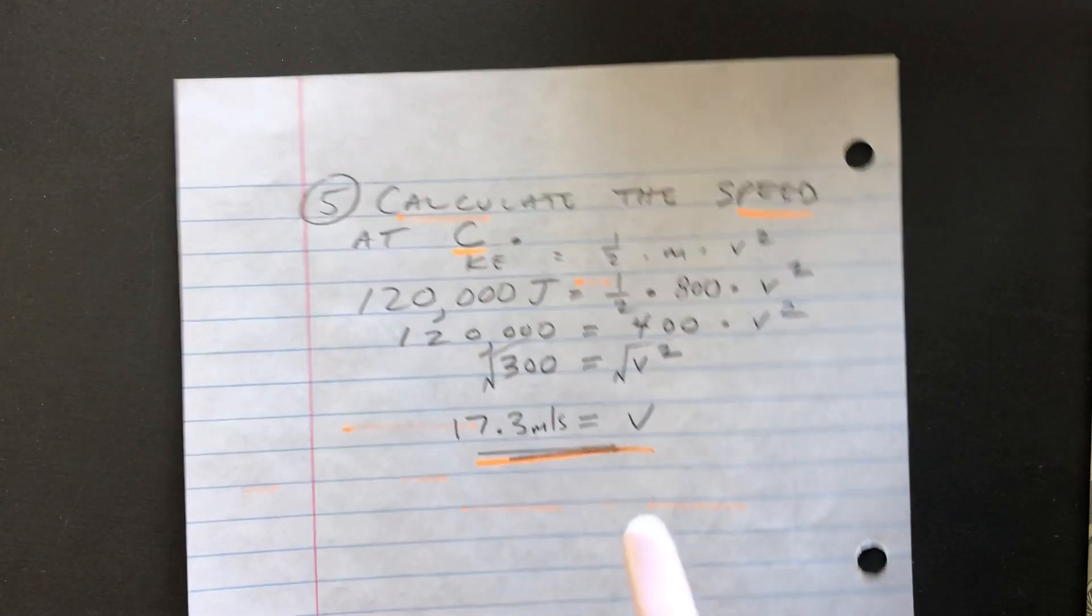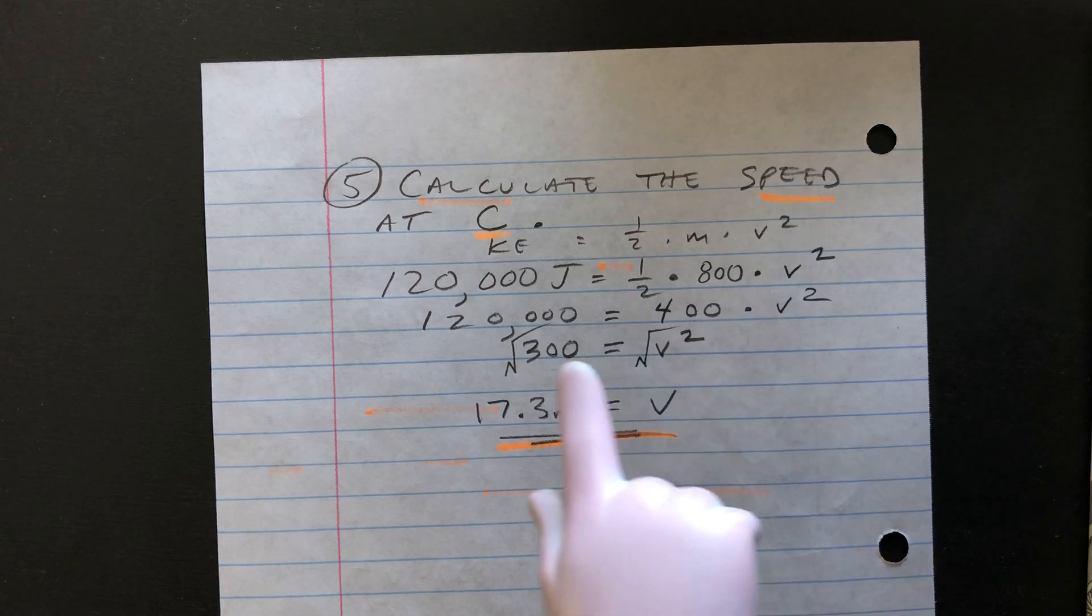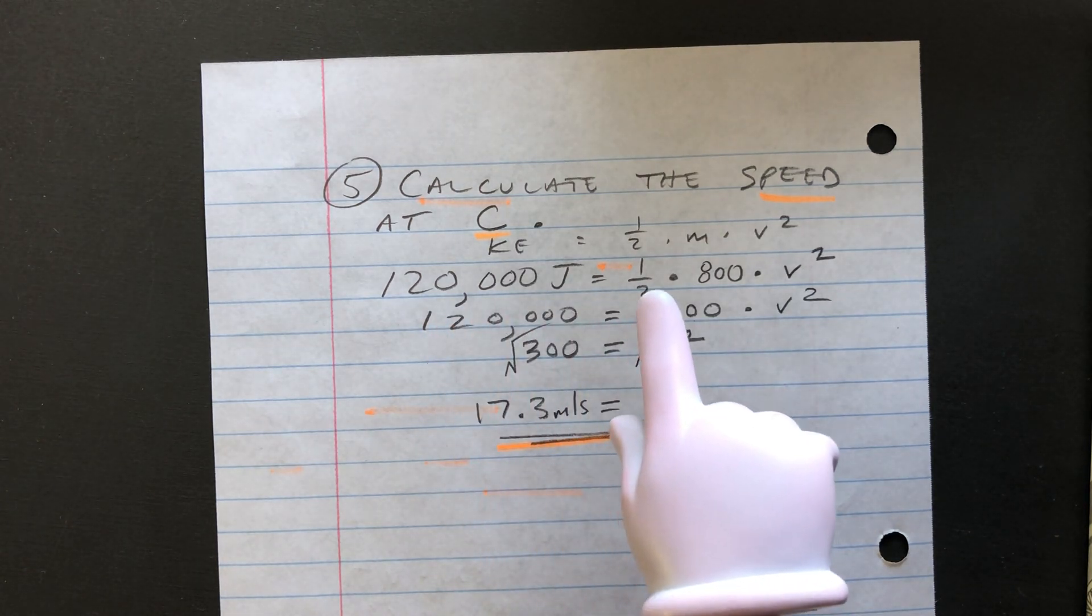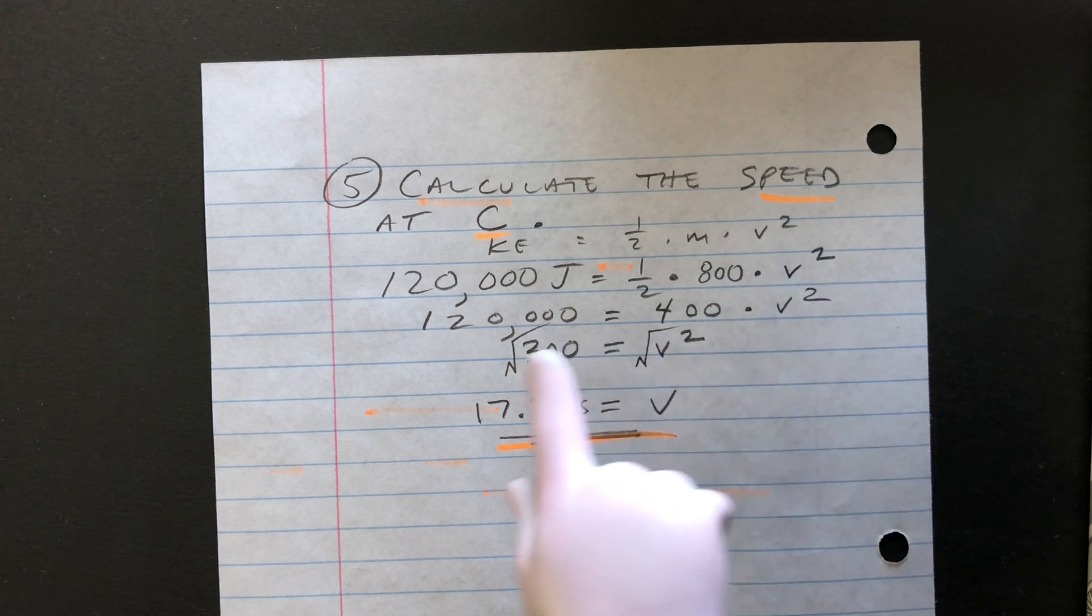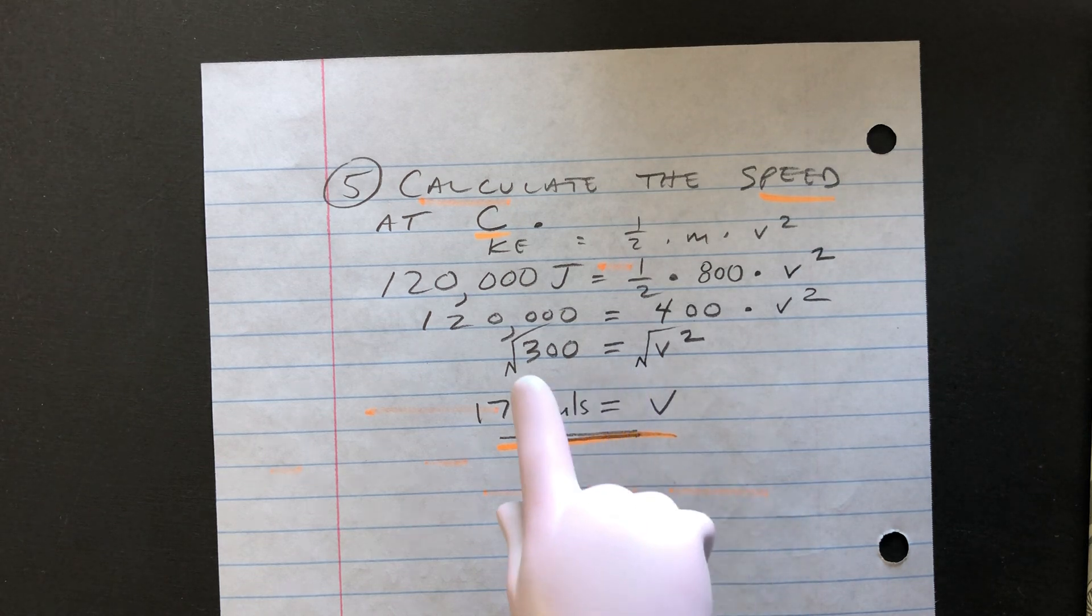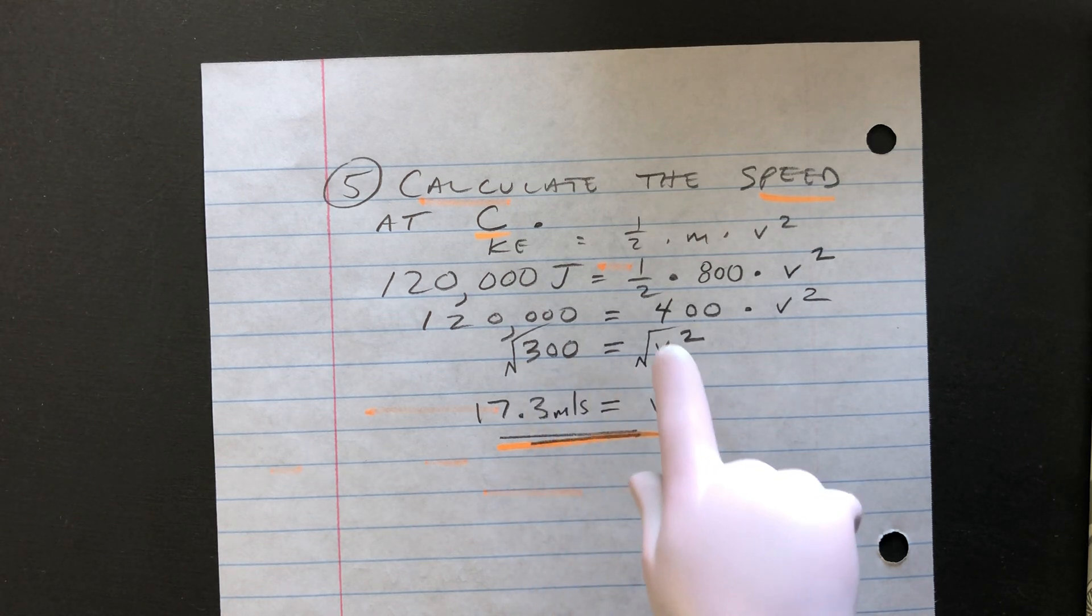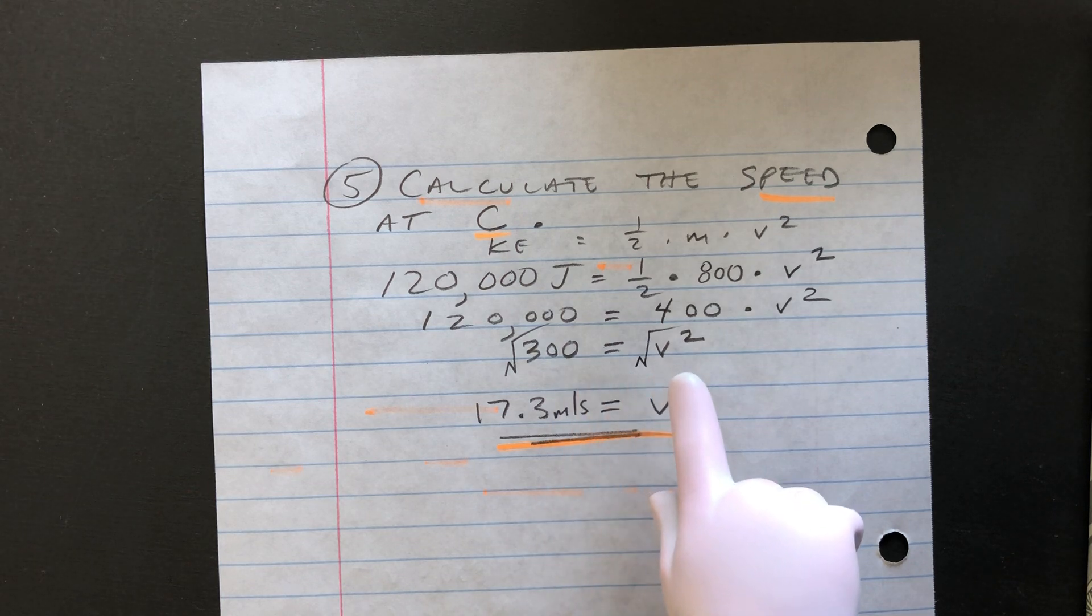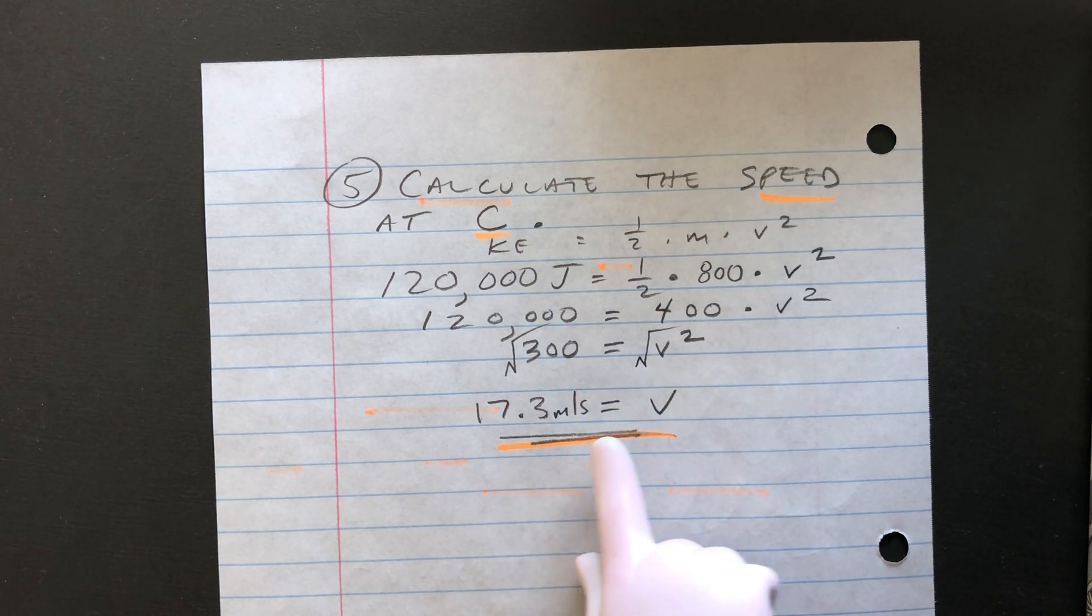And then finally, if you wanted to calculate the speed at C, you would take that 120,000 joules equals 1 half 800 V squared, going through the same process. Half of 800, and then take the square root, divide by 400, square root of both sides, and you'll get 17.3 meters per second.